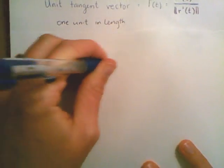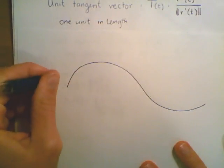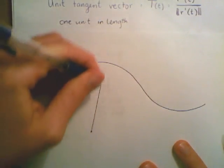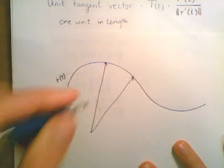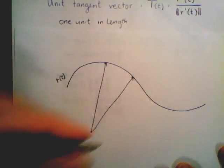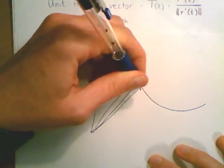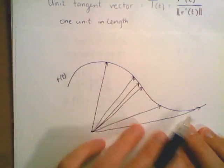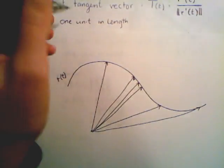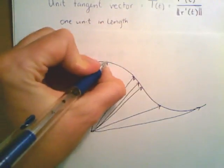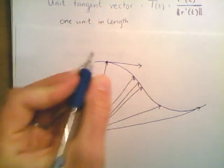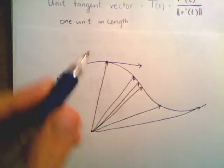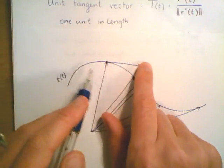Let's draw some pictures. We have some vector-valued function tracing out a path given by r of t. Recall that means we have a collection of vectors tracing out tips. This need not be an arc length parameterization, so a particle might move really slowly through one part and really quickly through another. Each arrow represents one unit of time as the particle travels along this path.